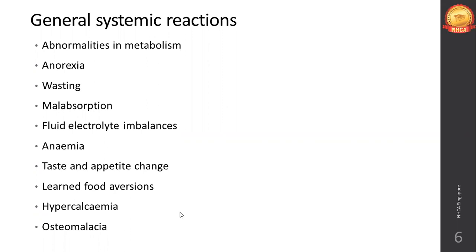Hypercalcemia - too many free calcium ions circulating in the blood, not absorbed by bones or the GI tract, which can lead to renal disorders. Osteomalacia - when bones cannot absorb calcium from blood to deposit in bone matrix, it leads to softening of the bones. These are the general systemic reactions seen in cancer patients.